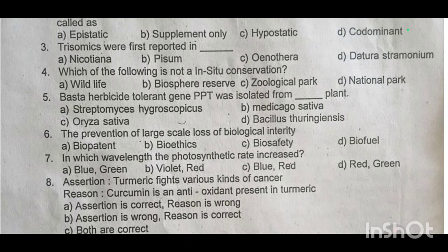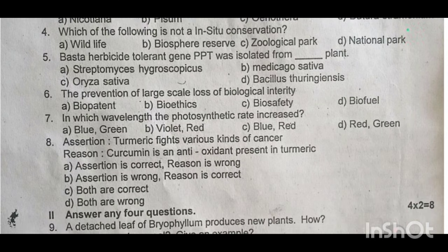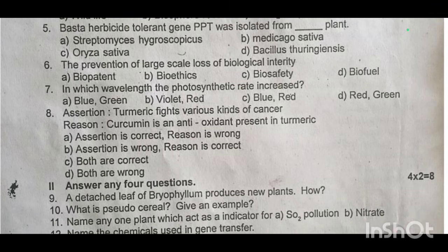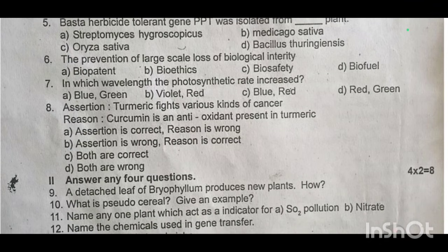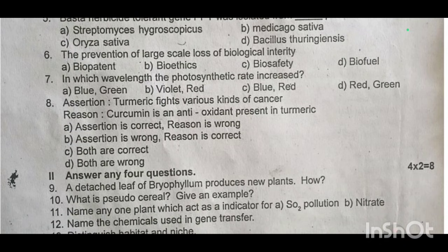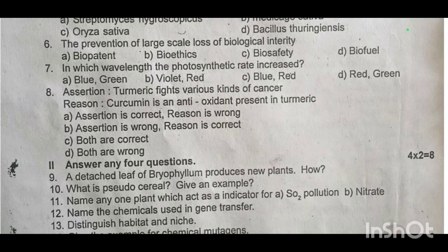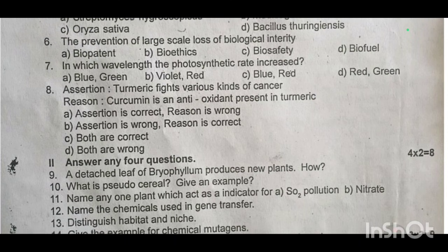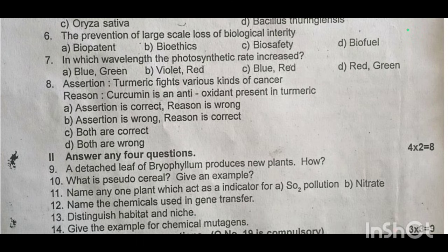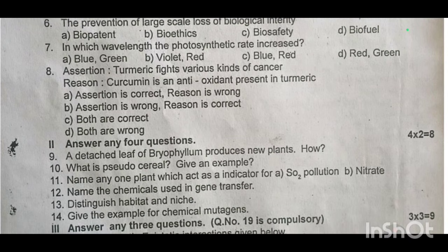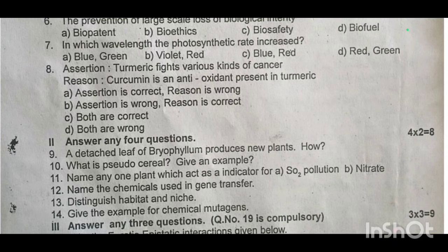Curcumin is an antioxidant present in turmeric. Now, two-mark questions — these are the most important repeated questions. Ninth one, the detached leaf of a butterfly plant produces new plants. Tenth one, what is a pseudo cereal? Give an example. Eleventh one, name any one plant which acts as an indicator for SO2 pollution and nitrate. Twelfth one, name the chemicals used in gene transfer. Thirteenth one, distinguish the habitat and niche. Fourteenth one, give examples for chemical mutagens.